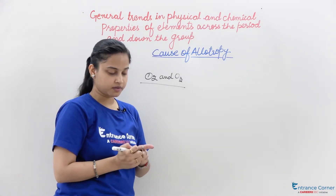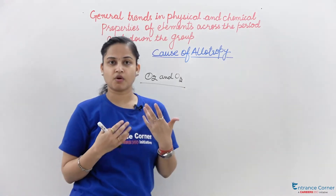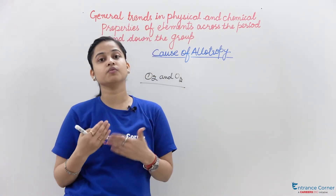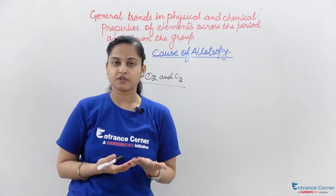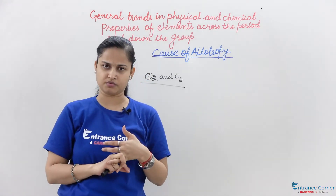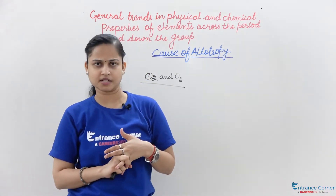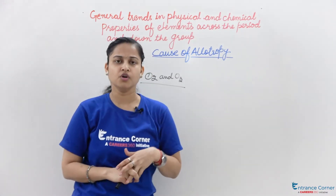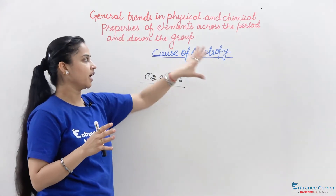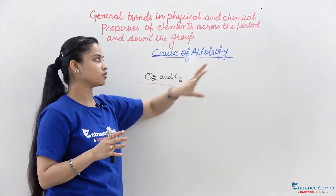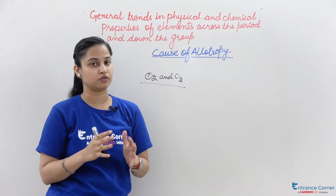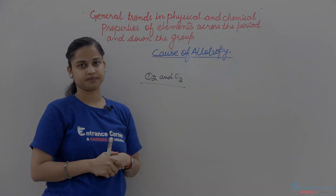Moreover, the cause of allotropy is also due to difference in nuclear spin — for example, orthohydrogen and parahydrogen. So this is the cause behind allotropy and I told you what allotropy is. Thank you very much.